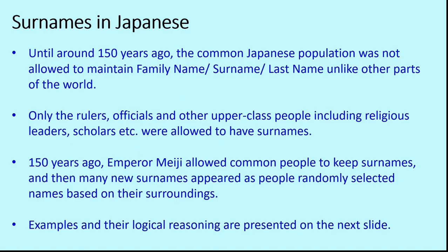We begin with surnames, also called last names in some parts of the world. Until around 150 years ago, the common Japanese population was not allowed to maintain a family name — that is, a surname or last name — unlike other parts of the world. They were not allowed to keep any surname, so they only had a first name. Only the rulers, officials, high-class people, including religious leaders, scholars, and doctors, were allowed to have surnames.